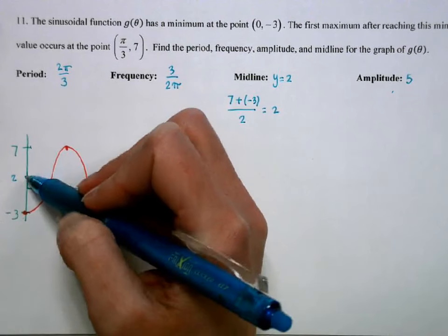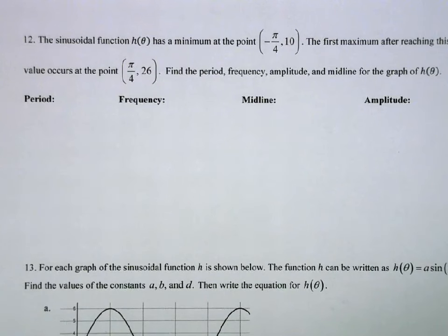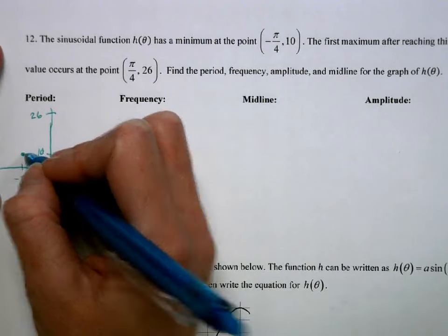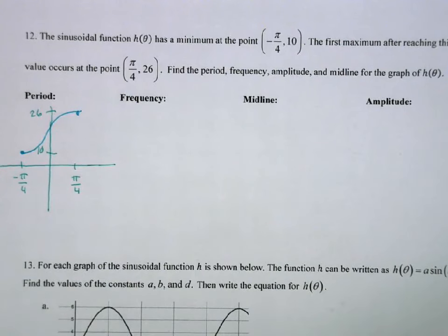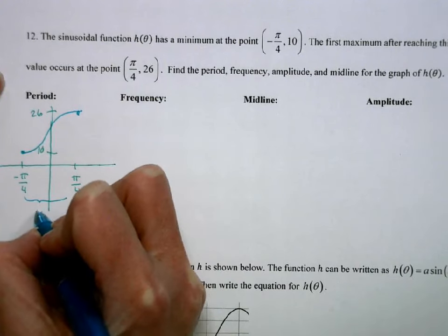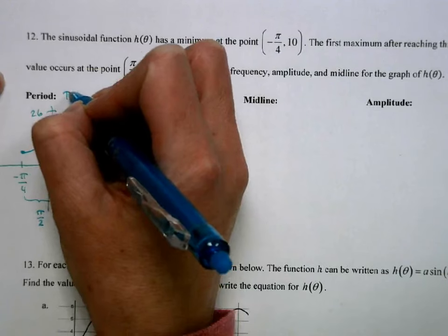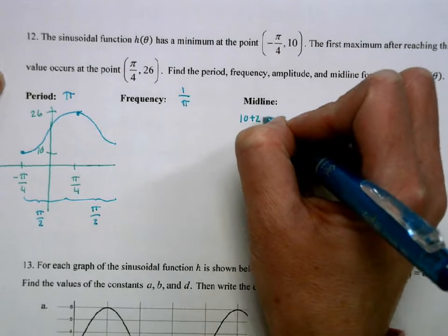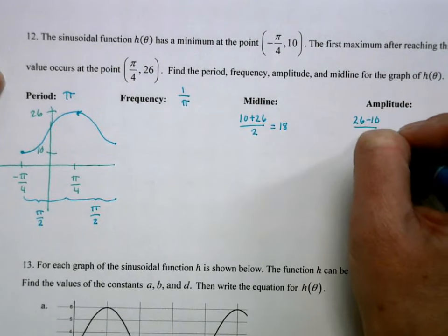Same question with different points: minimum at (−π/4, 10) and maximum at (π/4, 26). The half-cycle is π/2, so the full period is π. Frequency is 1/π. The midline is the average of 10 and 26, which is 18. The amplitude is half the distance from max to min: (26 − 10)/2 = 16/2 = 8.